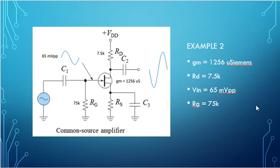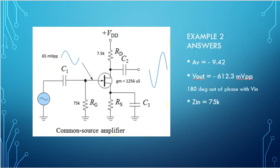Example 2. Our gain is 1256 microsiemens, our drain resistor is 7.5K, Vin is 65 millivolts peak to peak, and our gate resistor is 75K. What we have to do is find our gain, find Vout, and find our input impedance. The answer is the gain is minus 9.42, our Vout is minus 612.3 millivolts peak to peak, which means it's 180 degrees out of phase with Vin, and Zin is 75K.